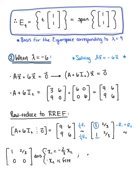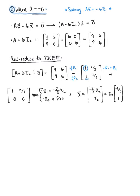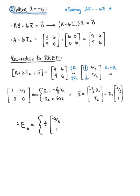The general solution is vector x equals x sub 2 times the vector with components negative 2/3, 1. Therefore, a basis for the eigenspace corresponding to lambda equals negative 6 is the set containing the vector negative 2/3, 1, or equivalently the span of the vector negative 2/3, 1.